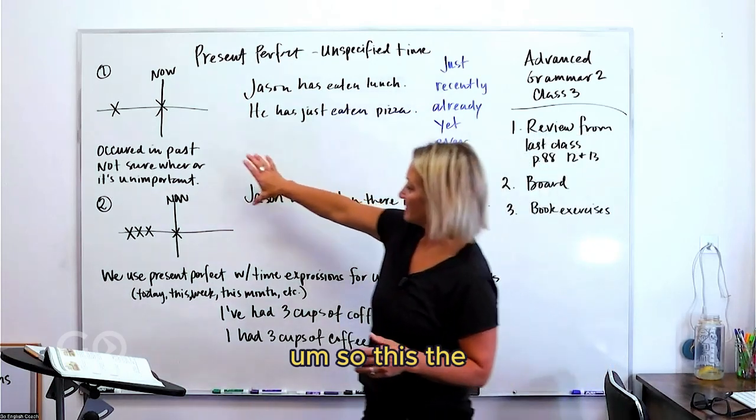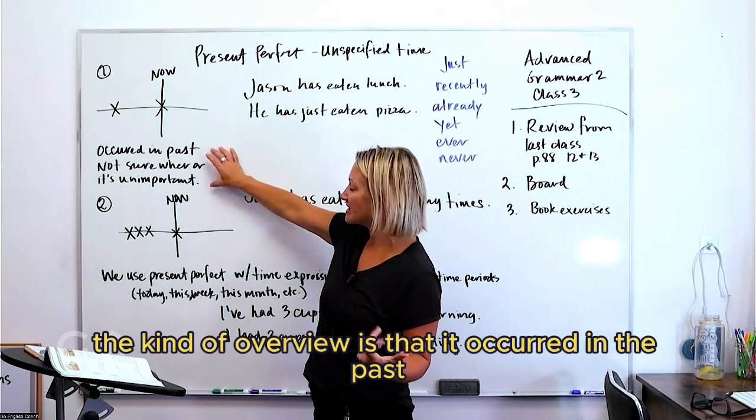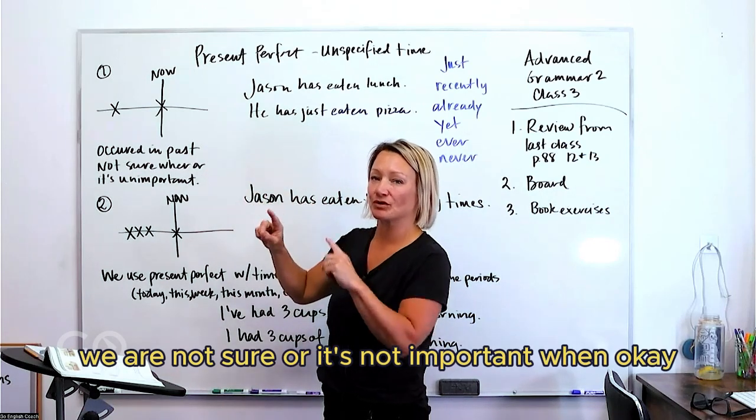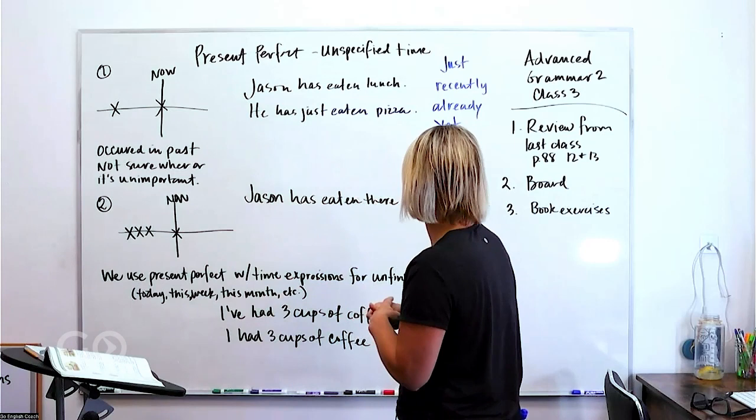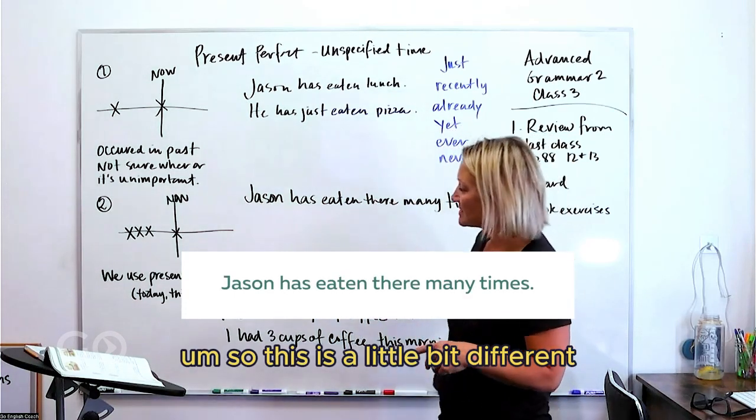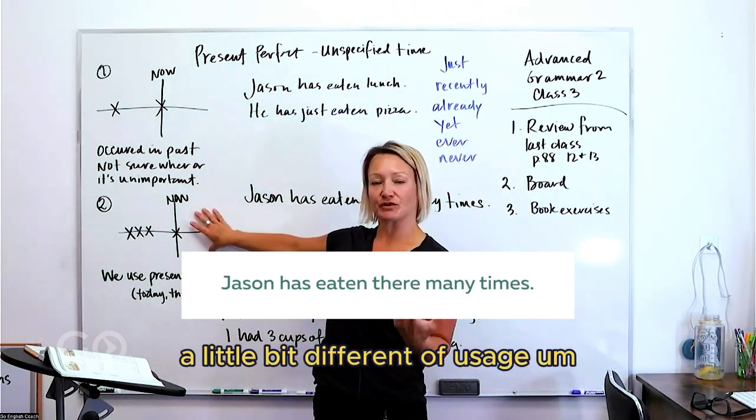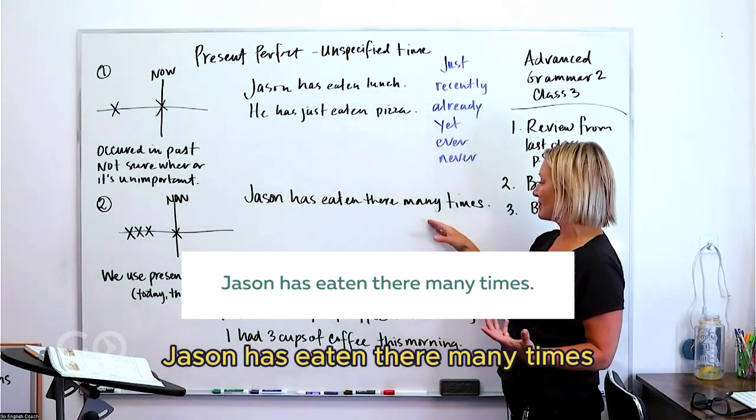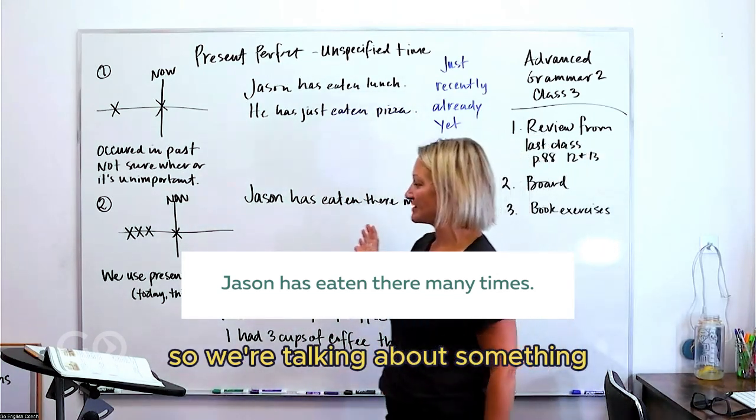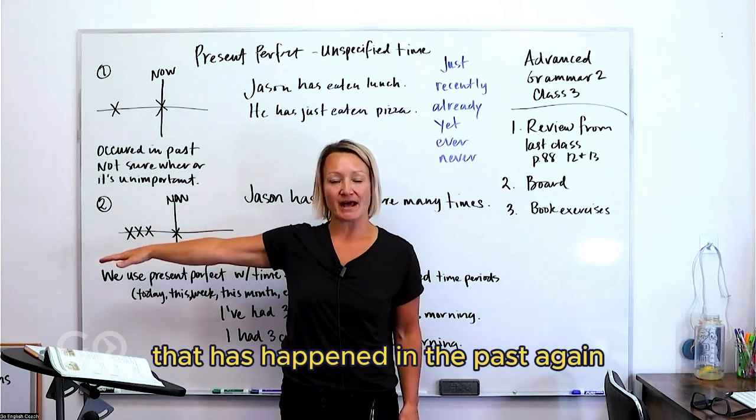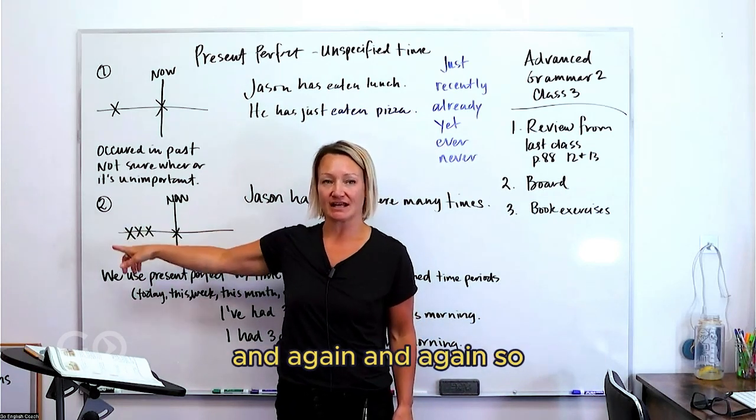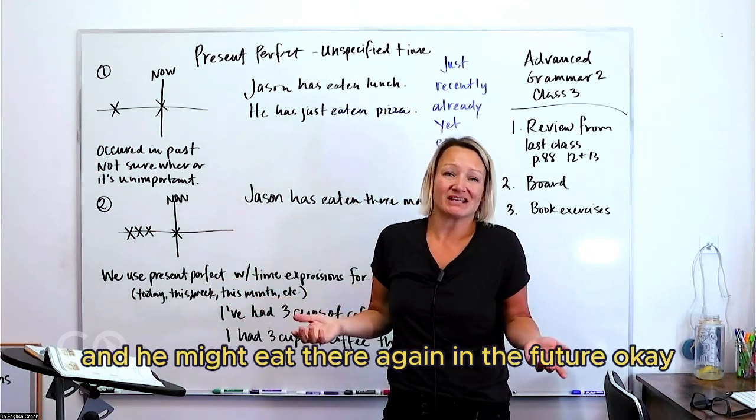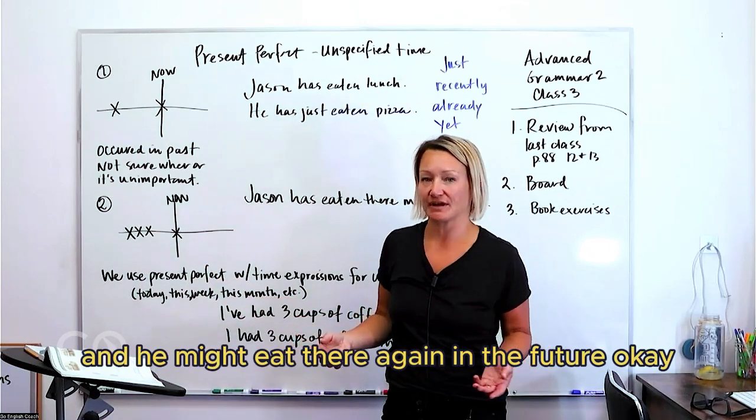So the kind of overview is that it occurred in the past, we are not sure or it's not important when. Okay, so this is a little bit different of a usage. Jason has eaten there many times. So we're talking about something that has happened in the past again and again and again. So we've got three little x's that happened in the past and he might eat there again in the future.